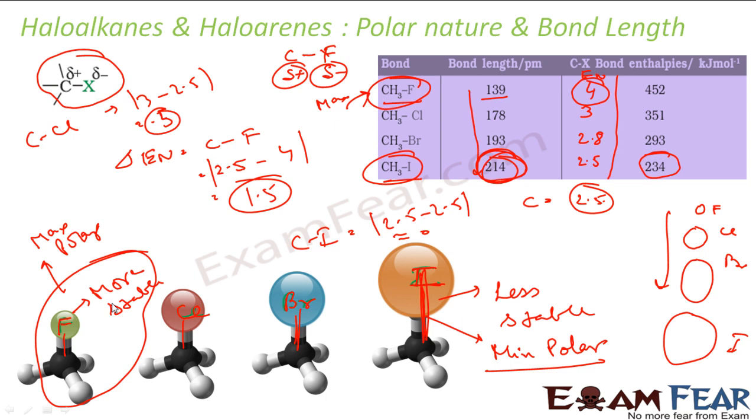See, if you talk about the stability, you usually talk about the bond length, and that depends on the size. So, C-I bond is very unstable because the length is more. And if you talk about the polar nature, you will talk about the difference in electronegativity. In that case, you see that C-F bond is more polar because the difference between electronegativity of carbon and fluorine is maximum.